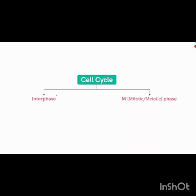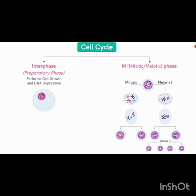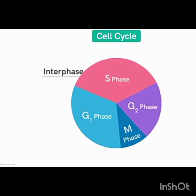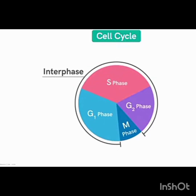Hello, good morning students and welcome back to my channel. Today let us see about cell division. We all know the cell cycle has interphase and M phase. M phase is divided into mitotic division and meiotic division. In interphase there are mainly four phases: G0, G1 phase, S phase, and G2 phase. M phase is called the divisional phase and interphase is the growing phase.